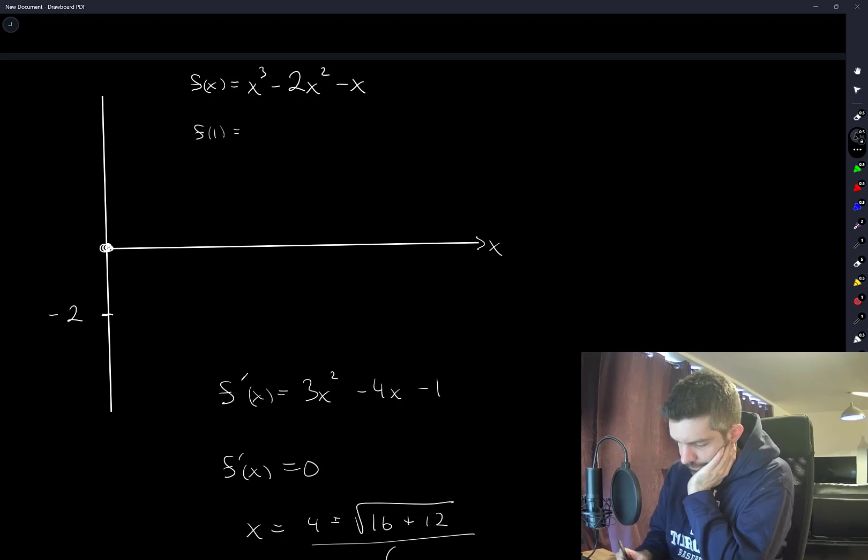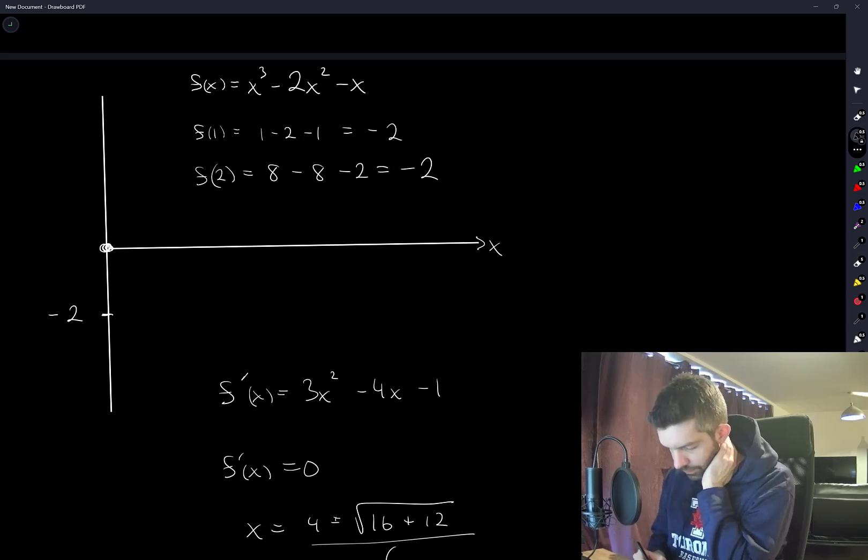f(1) is 1 minus 2 minus 1, which is negative 2. f(2) is 8 minus 8 minus 2, which is negative 2. Okay, well, this was a little bit easier.